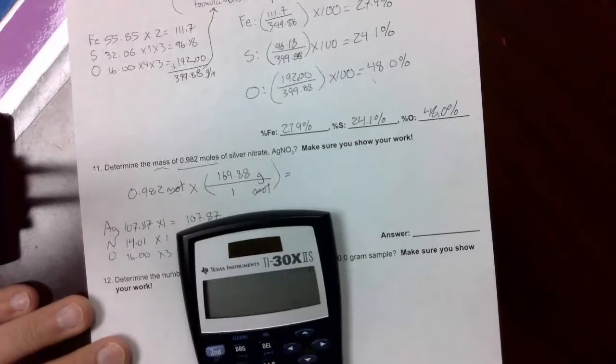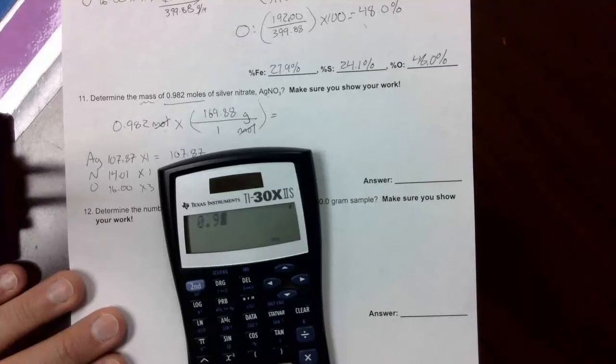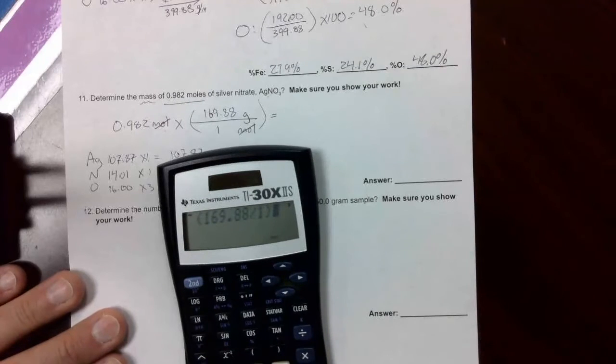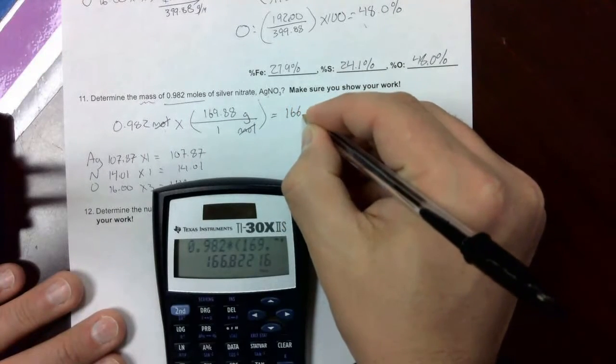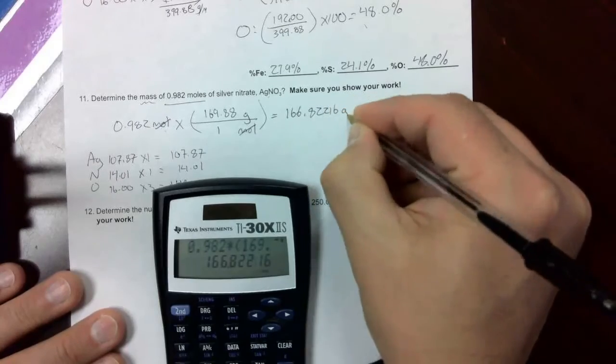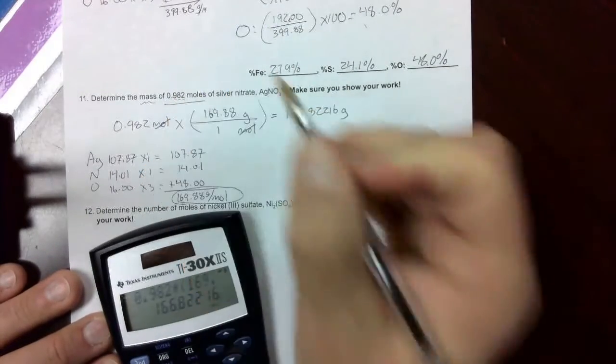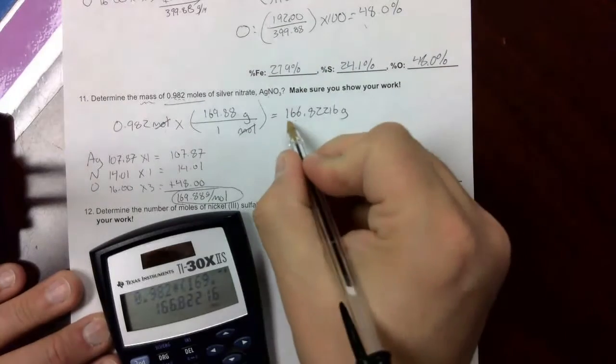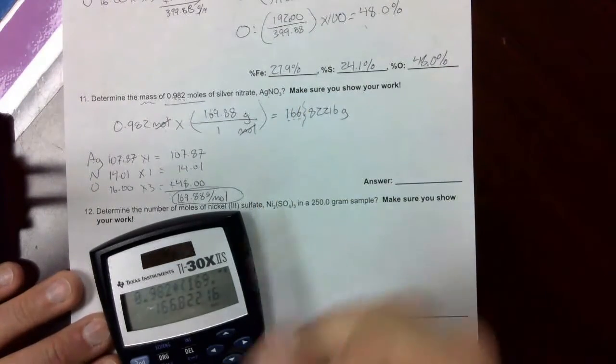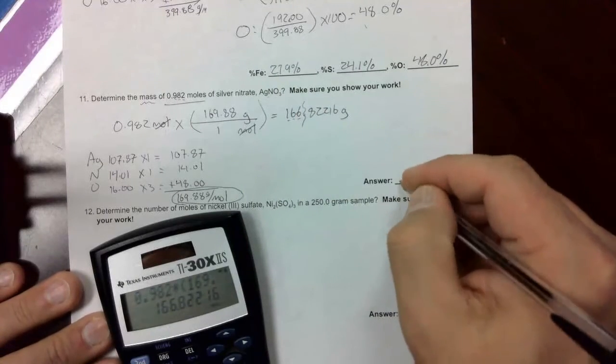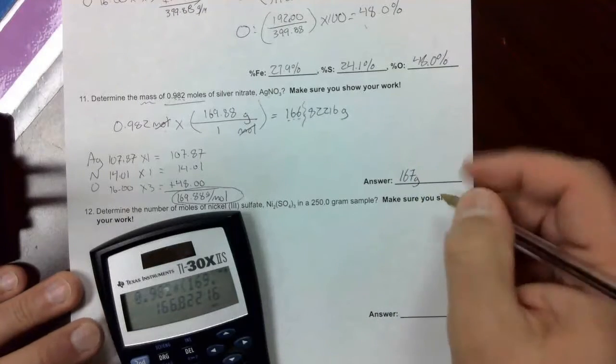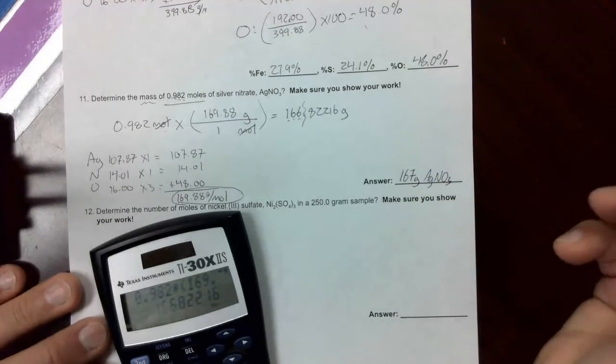So we'll type it just like it shows up on our paper. 0.982 times parentheses, 169.88, divided by 1, close parentheses, and hit enter. And we get 166.82216 grams. Now, we need to round. We've got three significant figures here. So we go to our third digit, which is this 6. We're going to cut it off there. The 8 behind that line tells me to round that 6 up to 7. So my final answer is going to be 167 grams of AgNO3, silver nitrate.